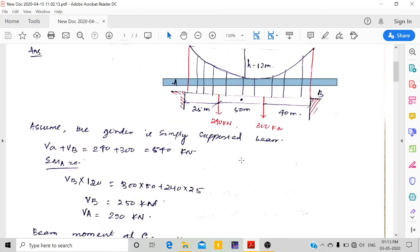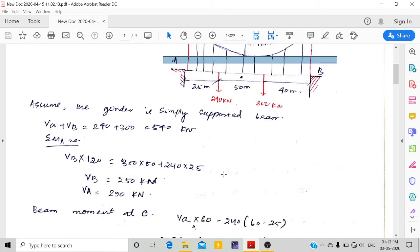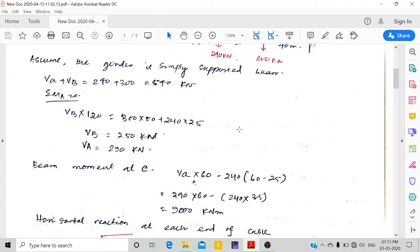Now I have to calculate the moment about C. The moment about C from the left side: VA times 60 minus 240 times the distance (60 minus 25), which gives 9000 kN·m.